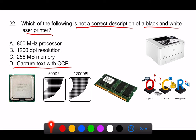While a printer may be used in conjunction with a scanner to capture text with OCR software, the printer itself, especially a black and white laser printer, does not have the capability to capture text with OCR. OCR is a function of scanning and software processing, not a direct function of the printing process.